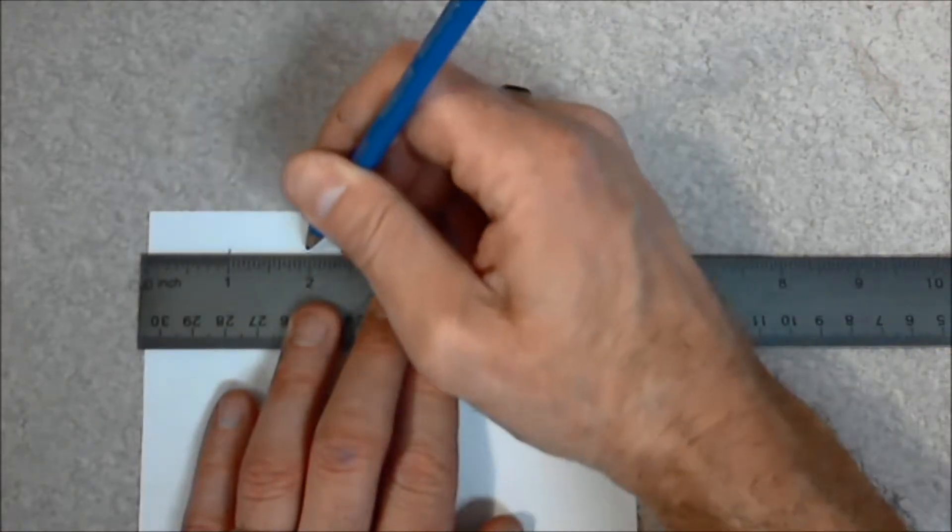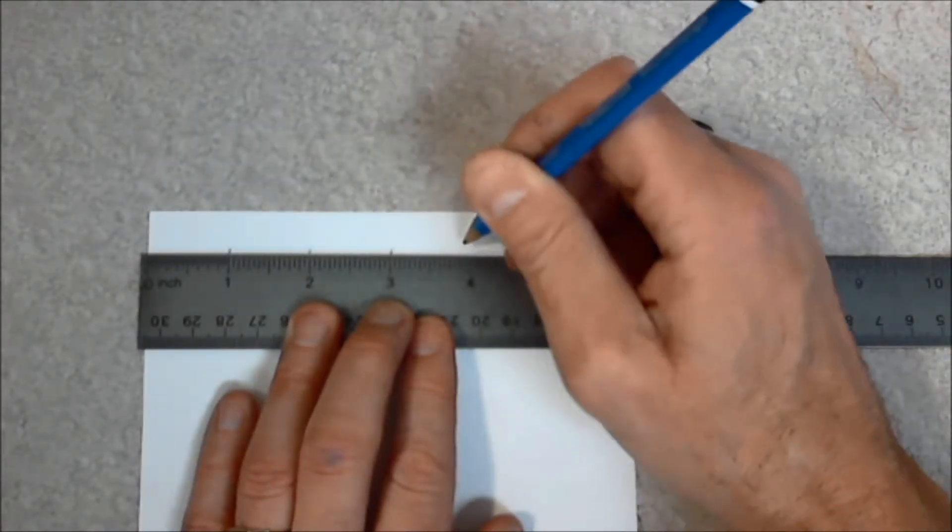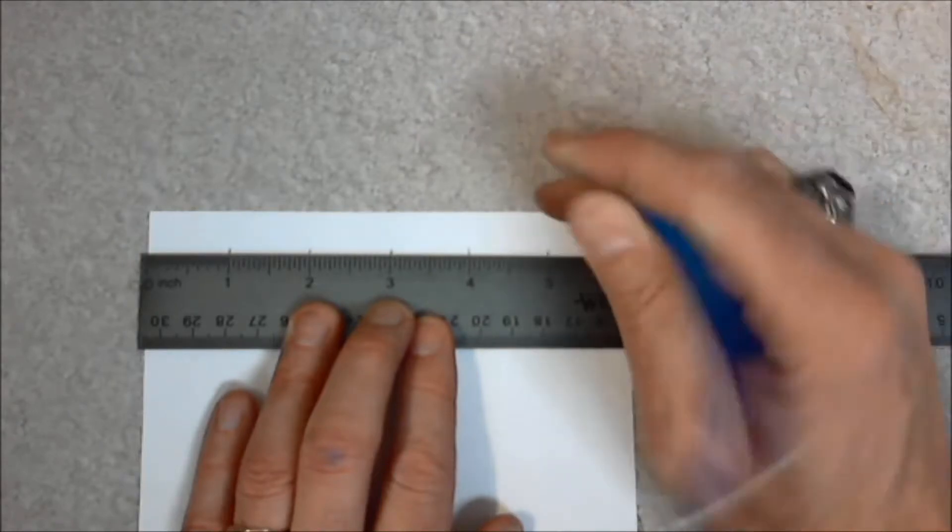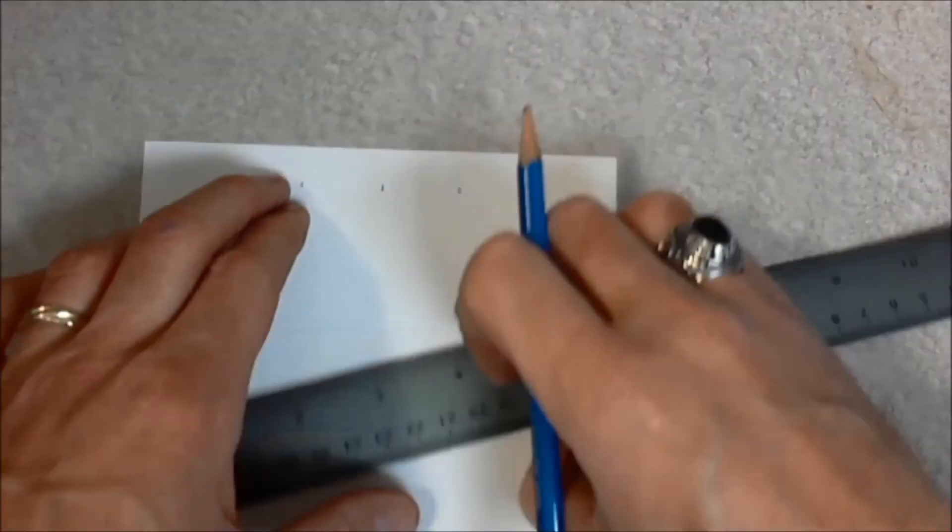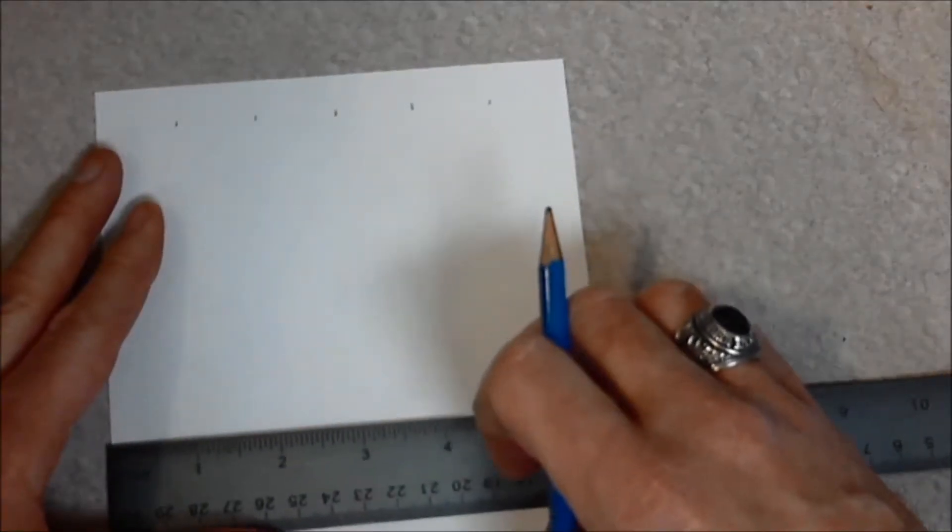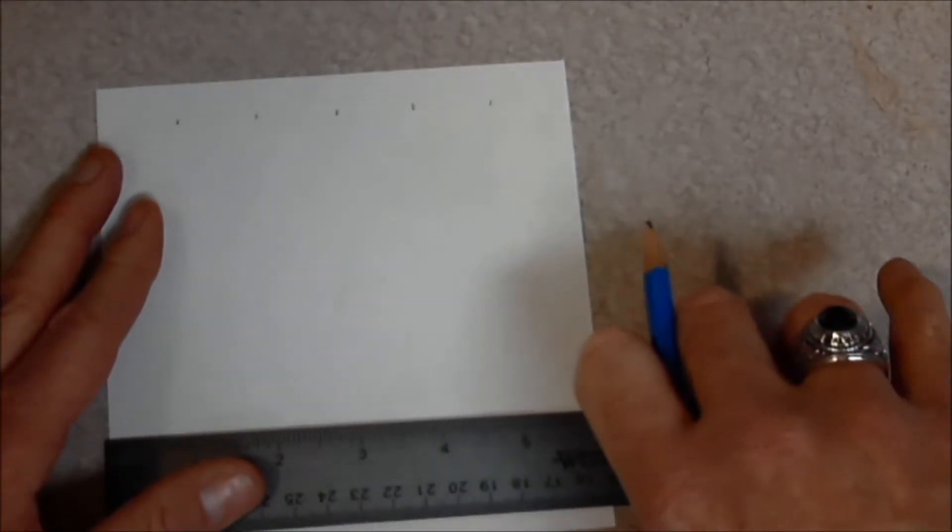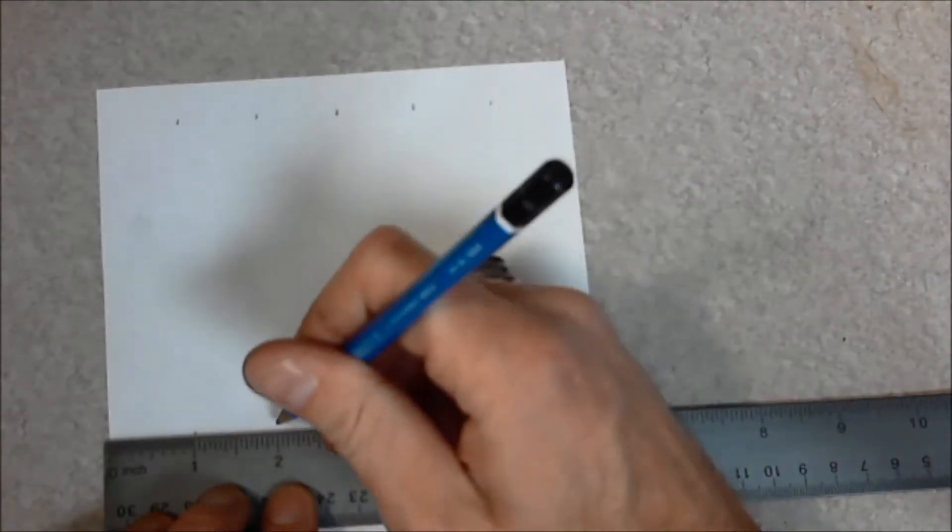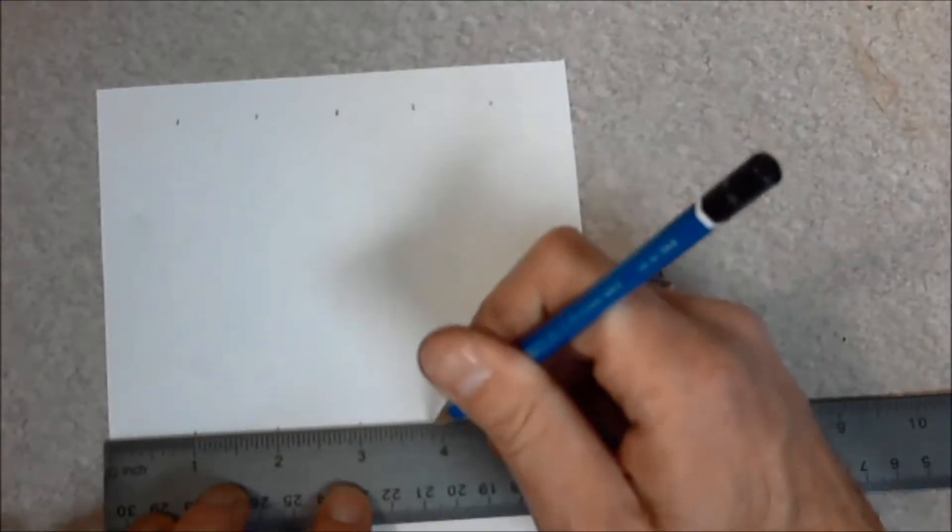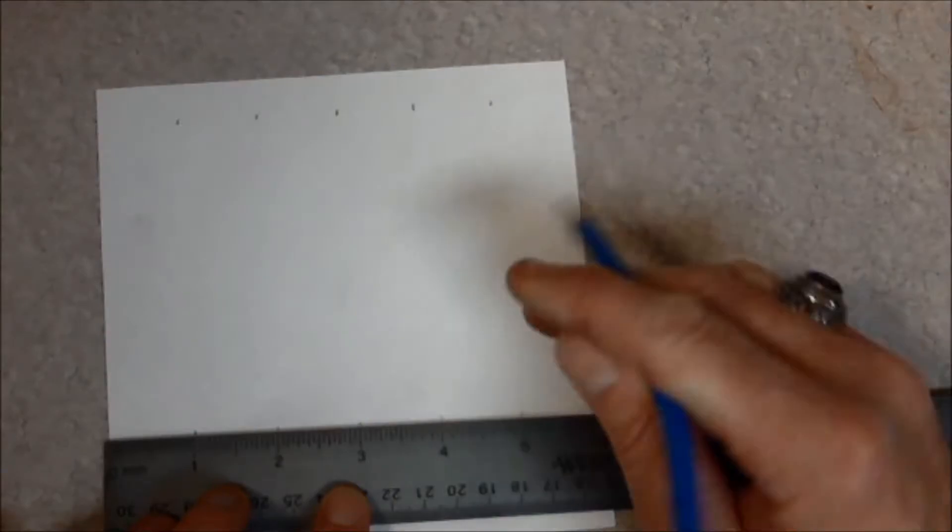I'm going to line this up. Make a mark at one, two, three, four, and five. And I'm going to slide my ruler down. I'm not turning my paper because if my paper is not square, then my grid is going to be crooked. I don't want a crooked grid. One, two, three, four, and five.